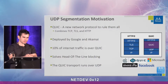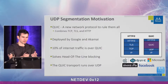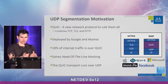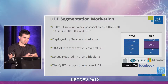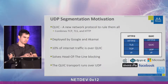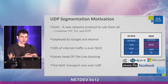The motivation for UDP segmentation offload is the QUIC protocol, which was presented here earlier. Just a quick recap: QUIC combines TCP, TLS, and HTTP in a single protocol. It's deployed today by Google and Akamai — a recent paper suggested it's about 10% of internet traffic. It solves a bunch of networking problems, such as head-of-line blocking, and most importantly, it runs over the UDP protocol.